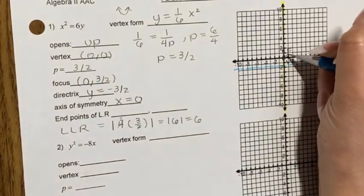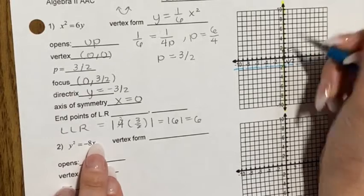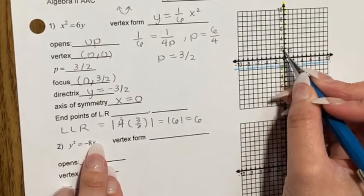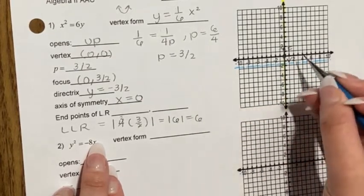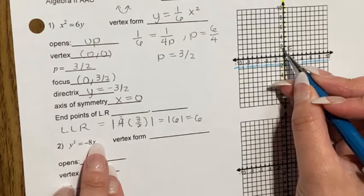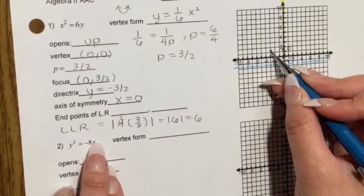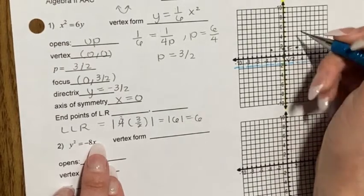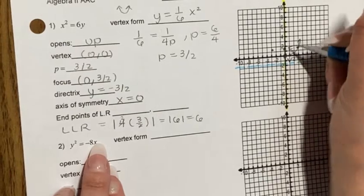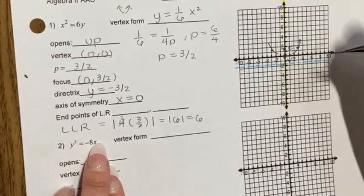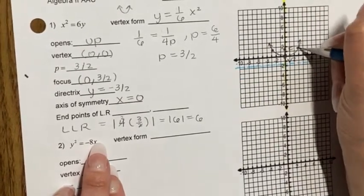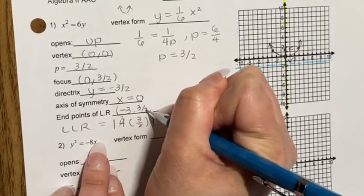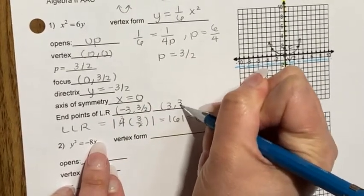Plotting it all: vertex at (0, 0), focus at (0, 1.5), directrix at y = −3/2, axis of symmetry at x = 0, and latus rectum endpoints at (−3, 3/2) and (3, 3/2). Now we have all the information for this parabola.